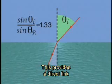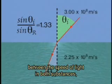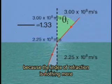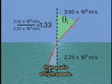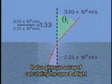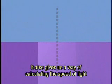This provides a direct link between the speed of light in both substances, because the index of refraction is nothing more than a ratio of light speeds. It also gives us a way of calculating the speed of light in an unknown substance.